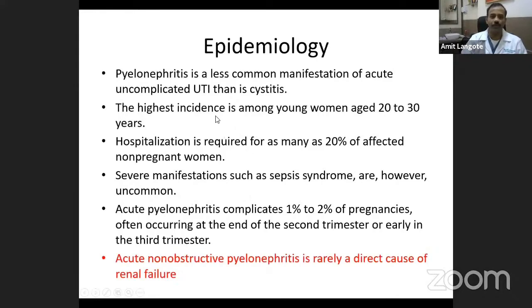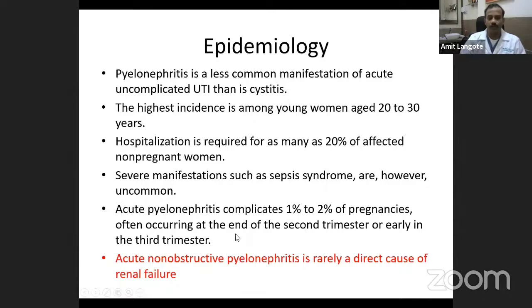Looking at the epidemiology of pyelonephritis: infection of the kidney is less common than infection of the bladder. The highest incidence is in young women between 20 to 30 years, and almost 20% of non-pregnant women need hospitalization for this infection. It can manifest with severe septic shock. It complicates 1 to 2% of pregnancies, commonly occurring at the end of the second trimester or early third trimester, and is rarely a cause of renal failure.